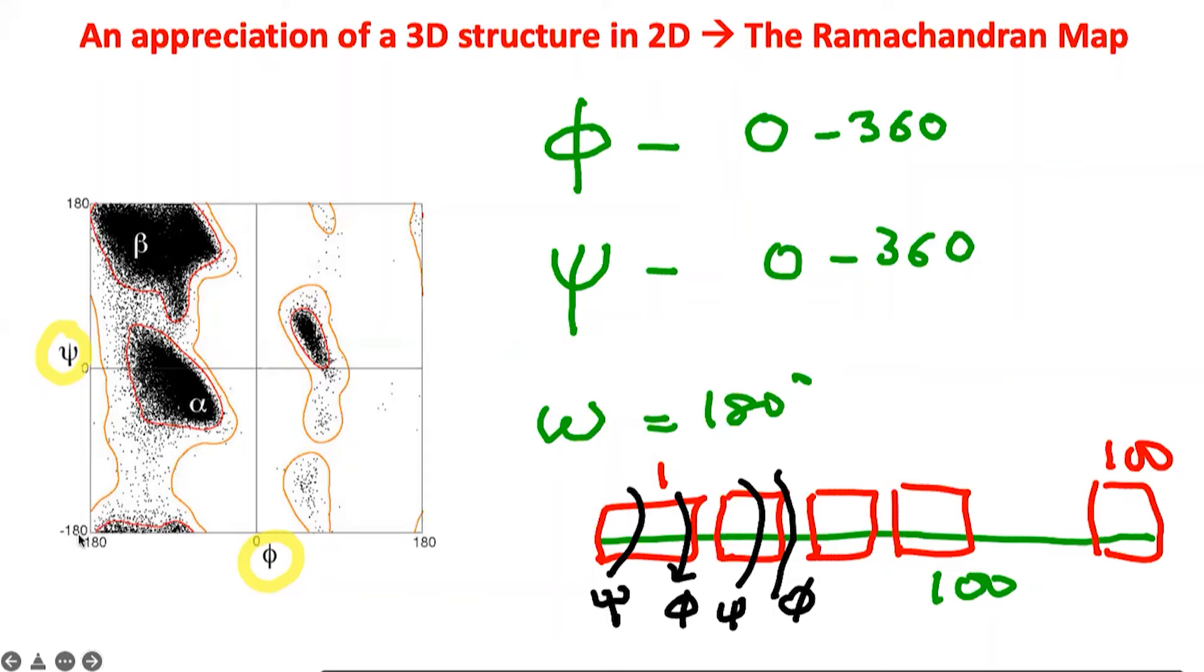And what Ramachandran basically found is that these dots did not occupy all the space available, all the three-dimensional space available. Remember, this is a two-dimensional representation of a three-dimensional object. And he found that many, many places—and I'm going to use red as a color—all these spaces were not occupied at all.